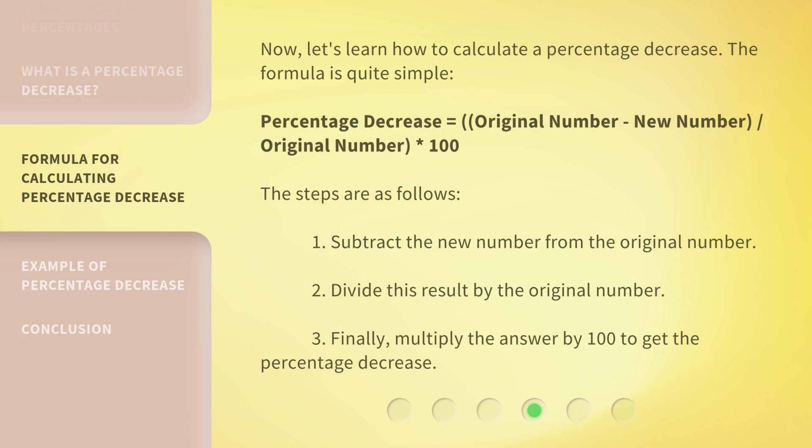Now, let's learn how to calculate a percentage decrease. The formula is quite simple. Percentage decrease equals (original number minus new number) divided by original number, multiplied by 100.